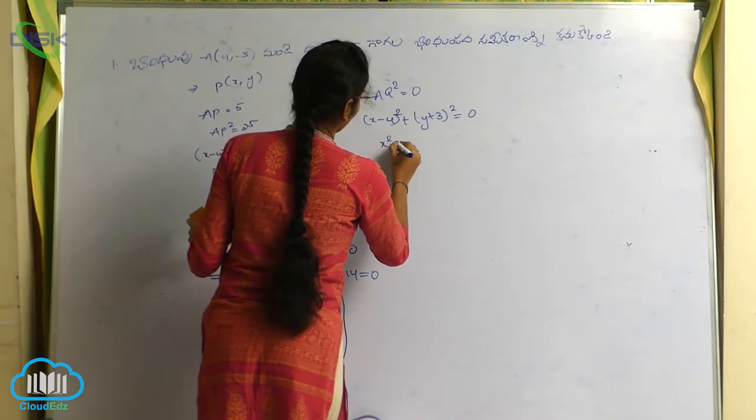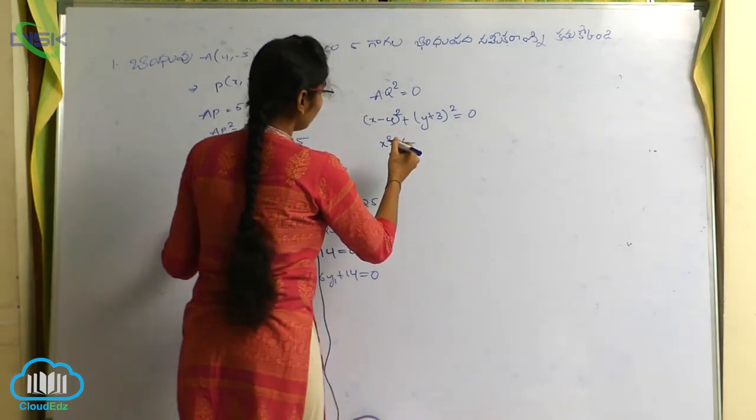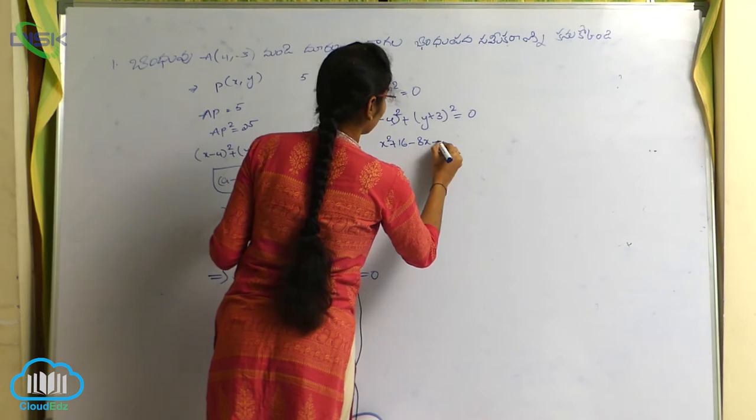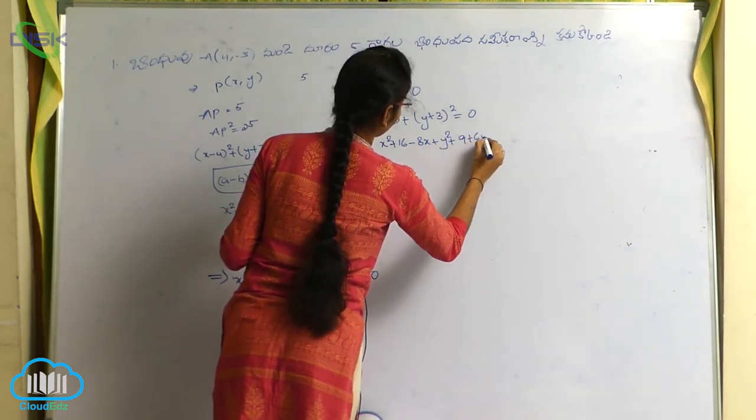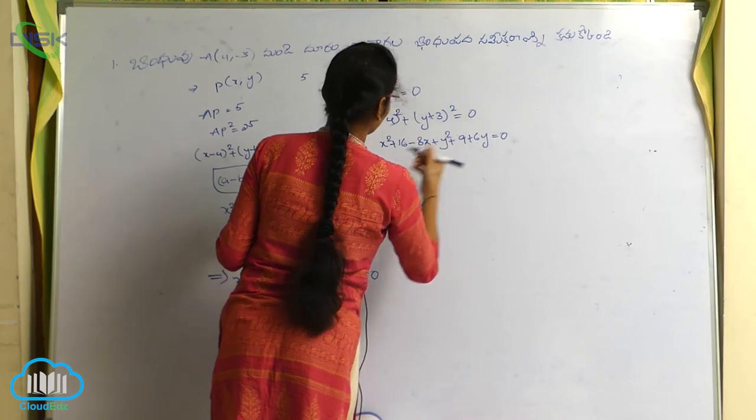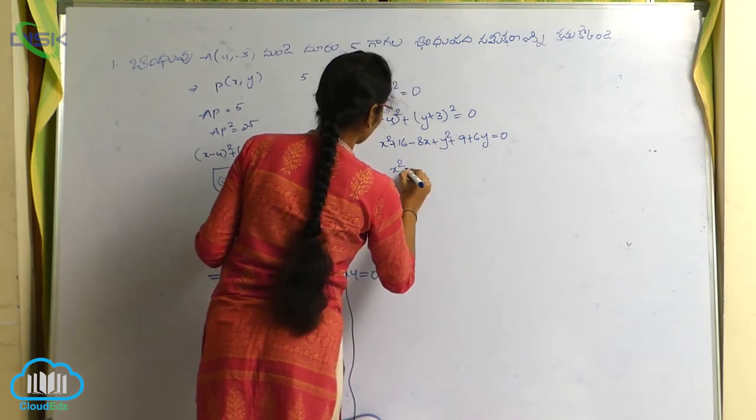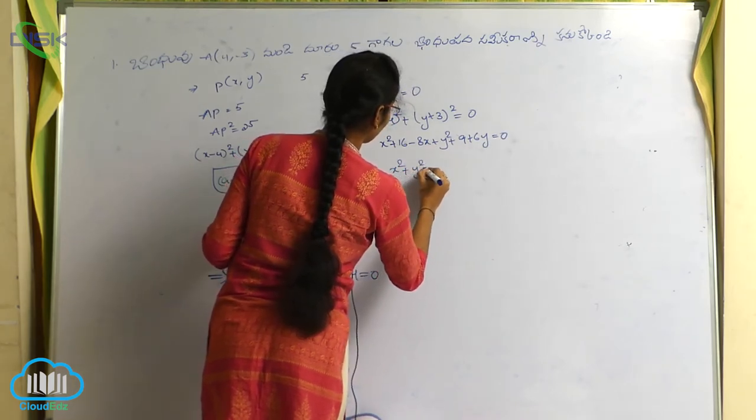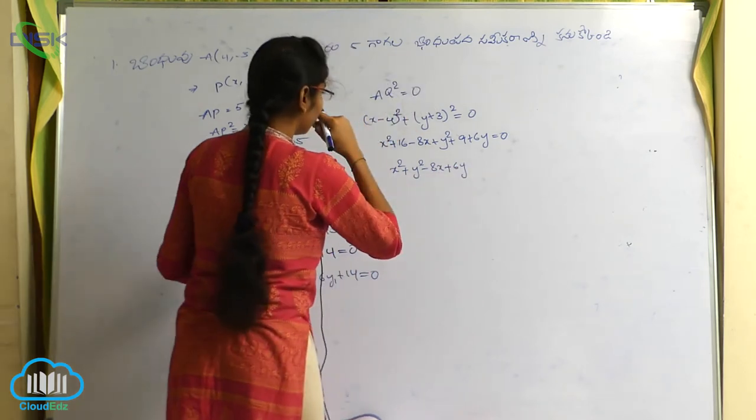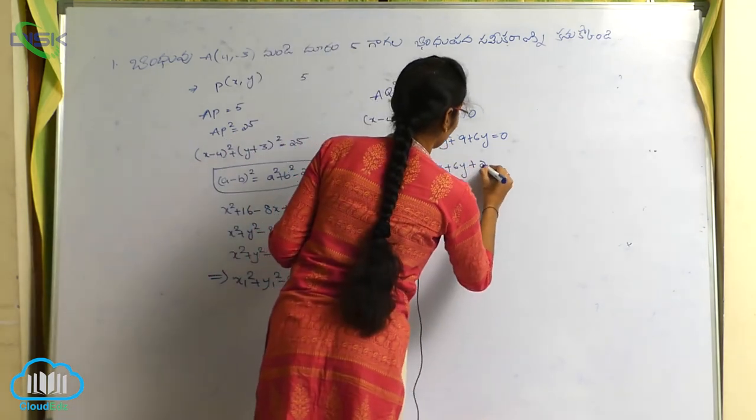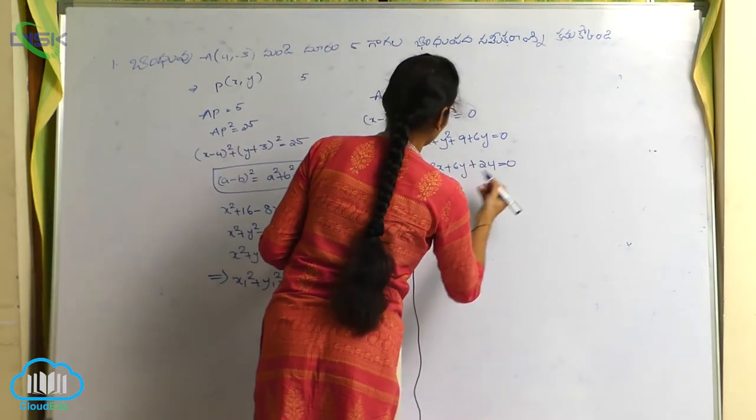Now, x² plus 16 minus 8x plus y² plus 9 plus 6y is equal to 0. The equation is, x² plus y² minus 8x plus 6y plus 24 is equal to 0.